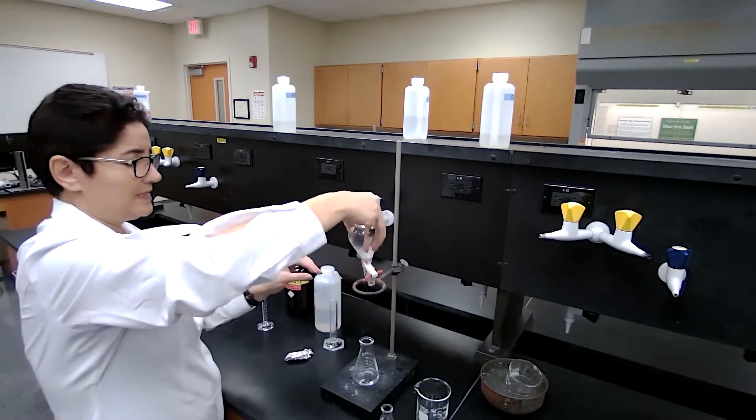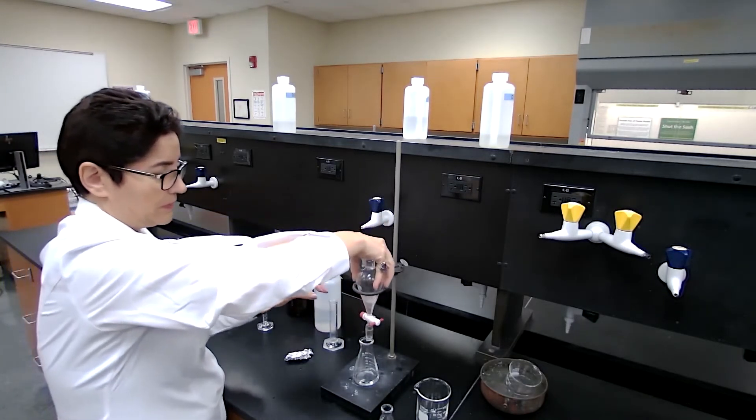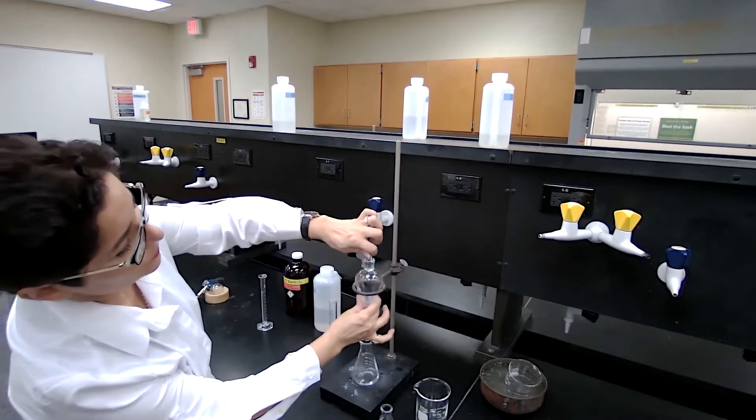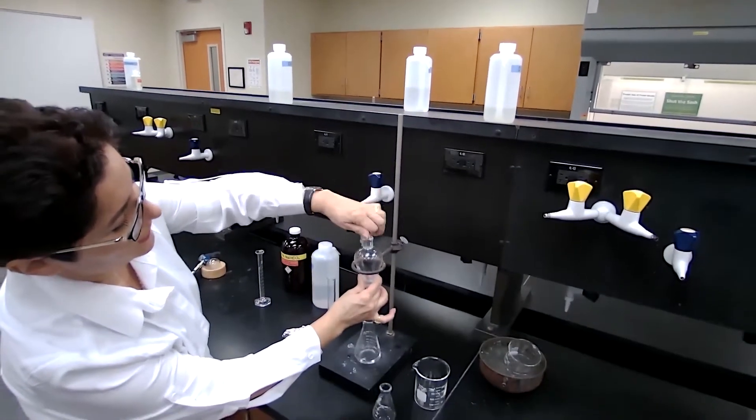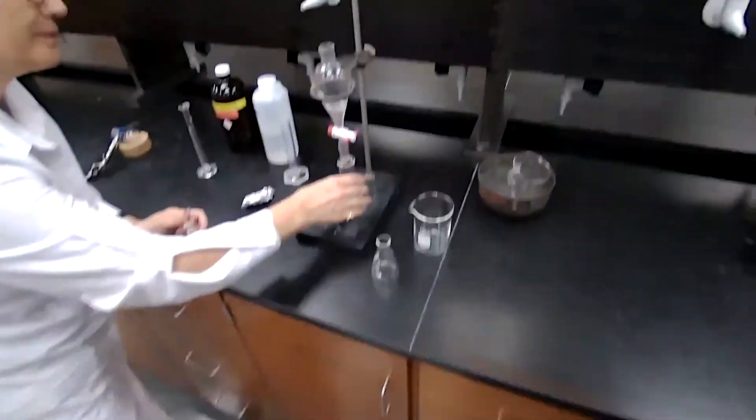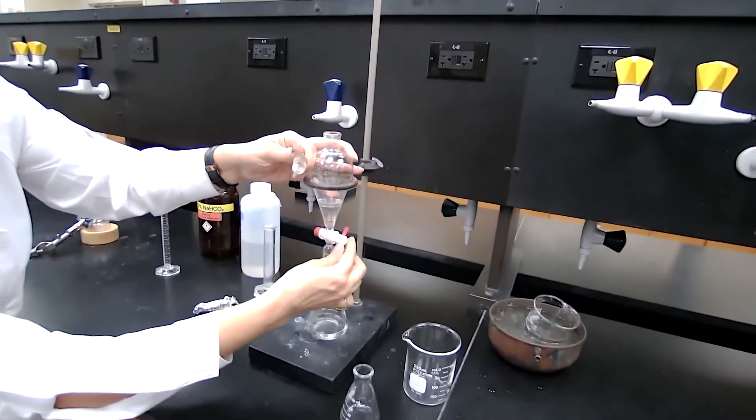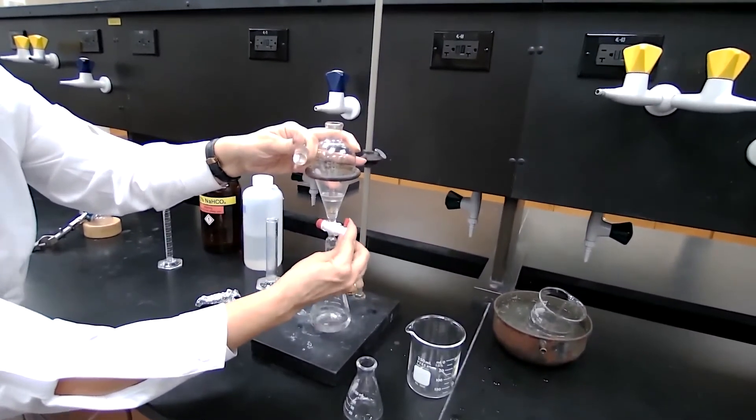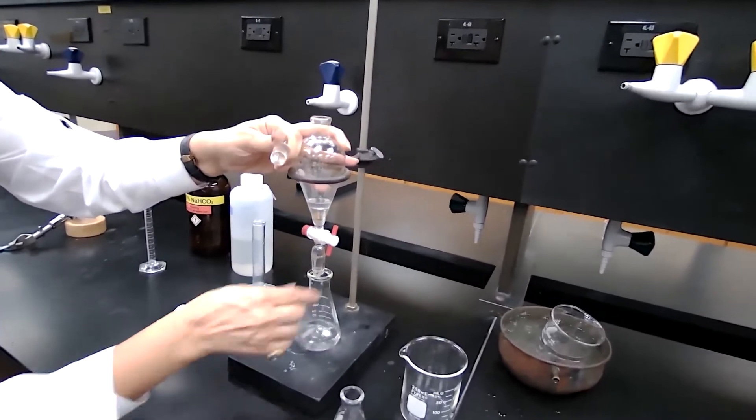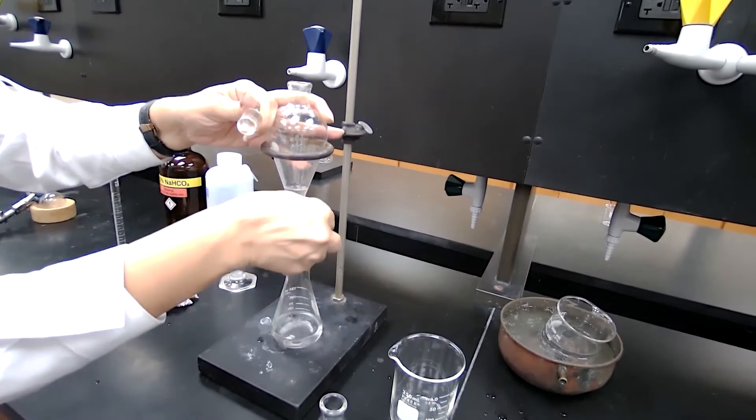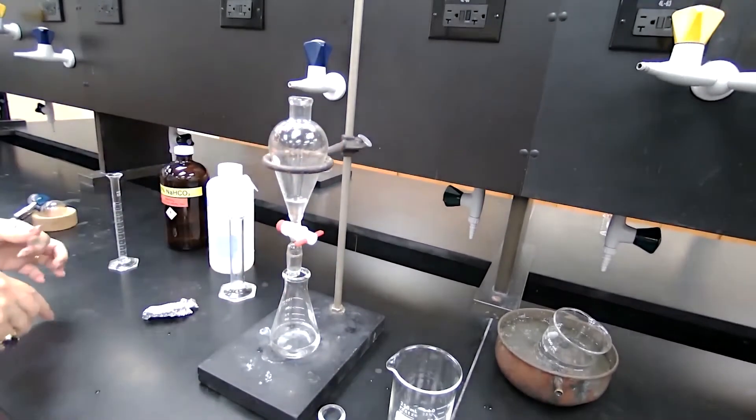Now place it back on the ring, or supported by the ring stand. Remove glass stopper for the two layers to form or separate. Remove the bottom layer. We already found that the bottom layer is the aqueous layer. And combine with the first wash that we had. Okay. Wash with the sodium bicarbonate.